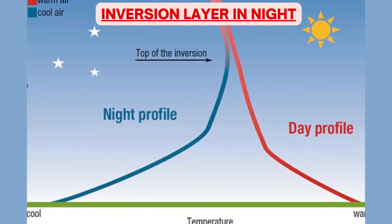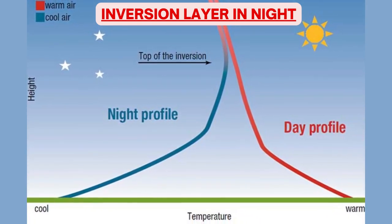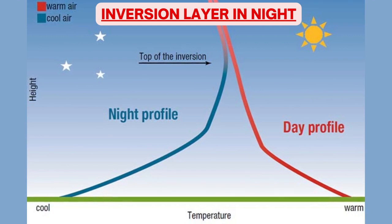Inversion layer at night: In the night, earth loses its heat energy by radiating heat into the atmosphere. Since there is no solar radiation at night, earth starts cooling after sunset. This results in cooler temperature of air which is in contact with the ground. Generally, the height of this layer is 1 kilometer above the ground, whereas the temperature of air above 1 kilometer is still warm at night. This results in the presence of an inversion layer near the ground at night, wherein the air at a lower height is cooler compared to air at a higher height.